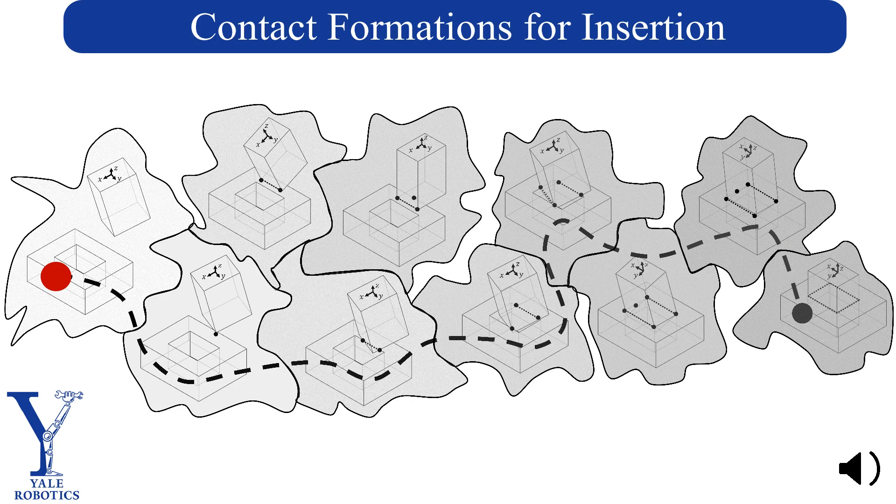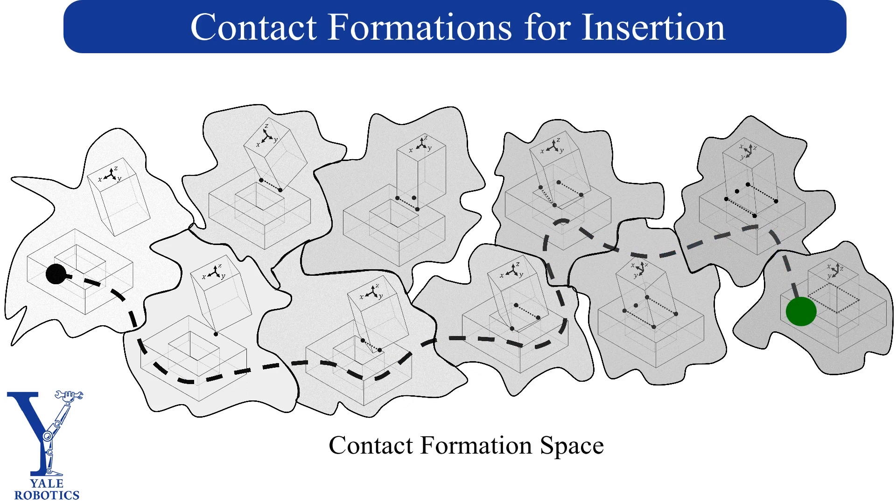In this work, we build off the observation that by following contact formations through a constraint-based progression, we can better generalize tight tolerance insertion for non-cylindrical objects in peg-and-hole applications when there exists uncertainty in the position and orientation of the hole.